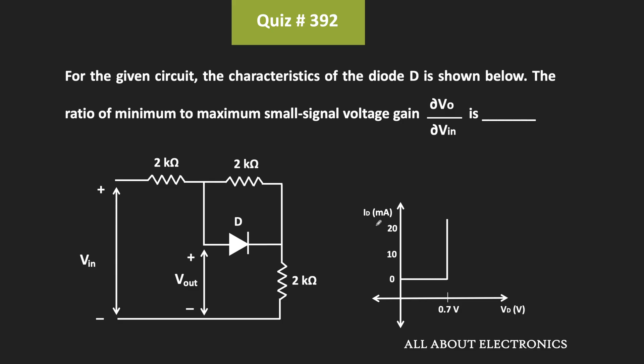Hey friends, welcome to the YouTube channel All About Electronics. So in this question, we have been given this diode circuit and we have also been given the characteristic of this diode. We have been asked to find the ratio of the minimum to maximum small signal voltage gain.